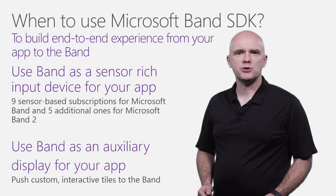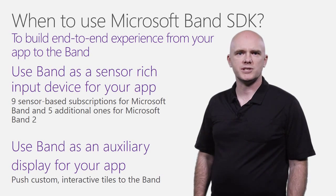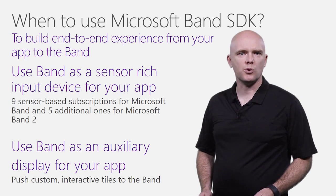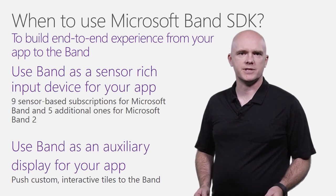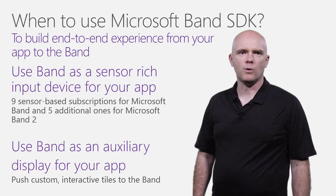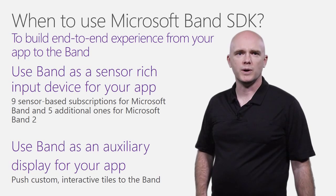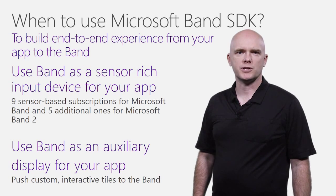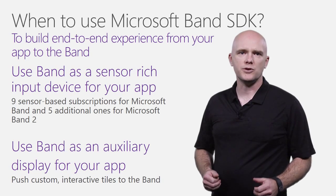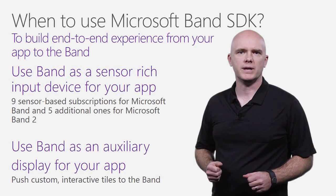The Band SDK allows you to open up new user experiences by using sensors as input sources. You could use the accelerometer as a controller for your app, for example. With the Band Tile API, you can extend your app UI onto the Band with a custom tile that allows you to provide app insights to your user. For example, you could alert the user to the end of an event in your companion app, such as a timer or long-running task being completed.